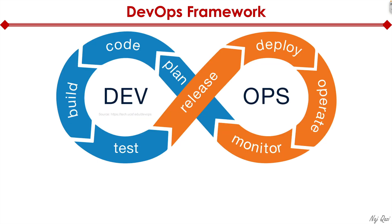Now let me zoom into the DevOps framework. We're bringing the development team and the network operations team together. The first thing that happens is the development team comes up with a game plan — they conceive of an application they want to design. So they go through the planning phase.